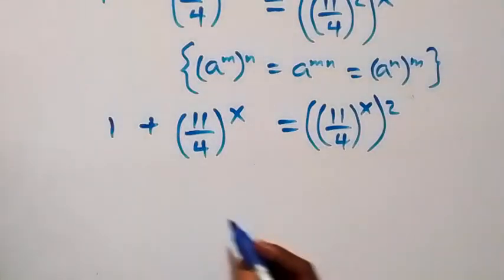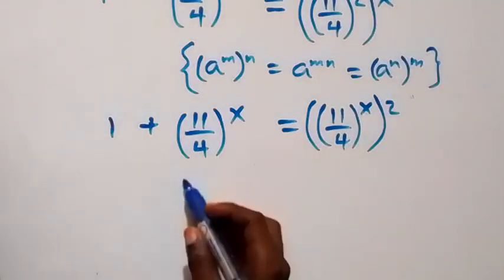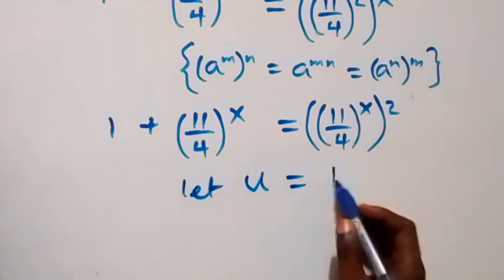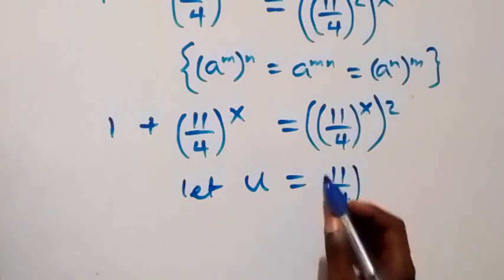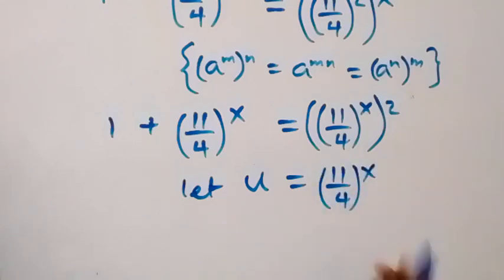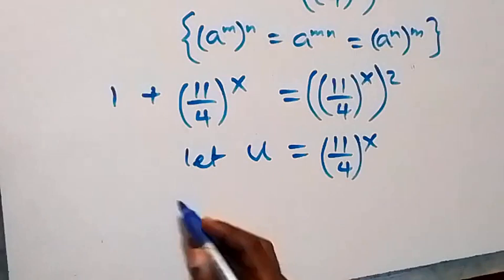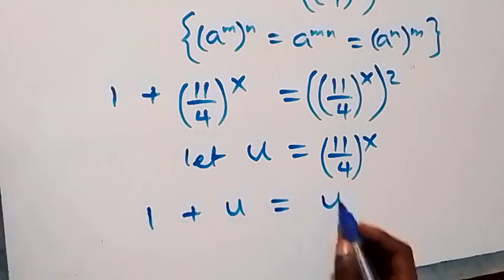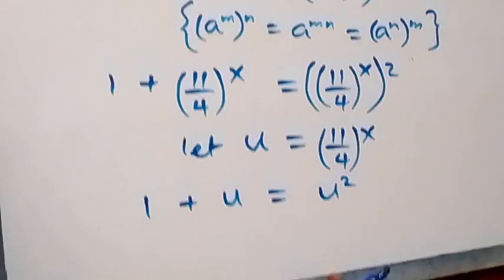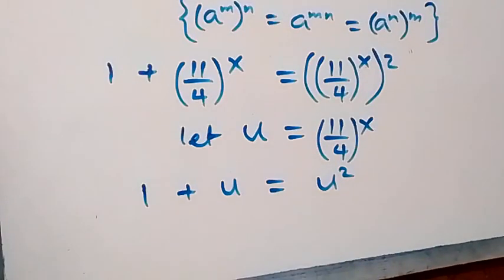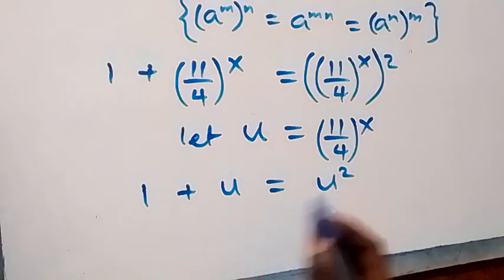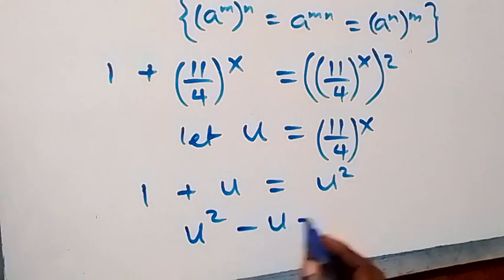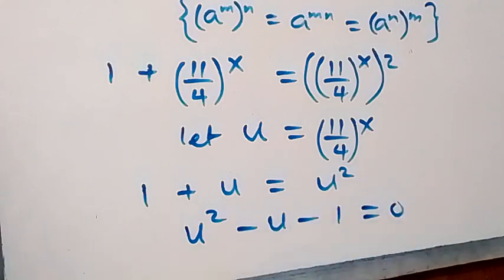Here we have 11 over 4 raised to power x. So let u equal 11 over 4 raised to power x. Then what we have becomes 1 plus u equals u squared. We take everything to one side, giving us u squared minus u minus 1 equals 0.